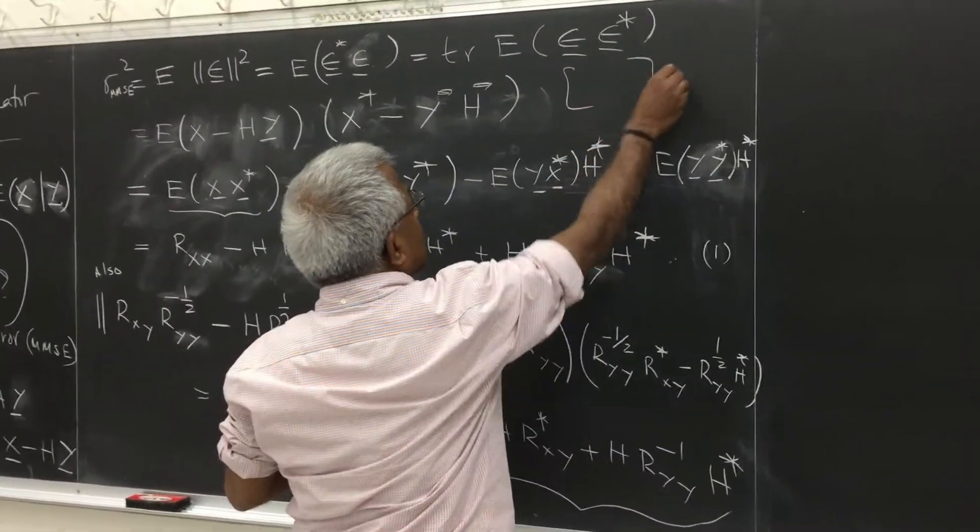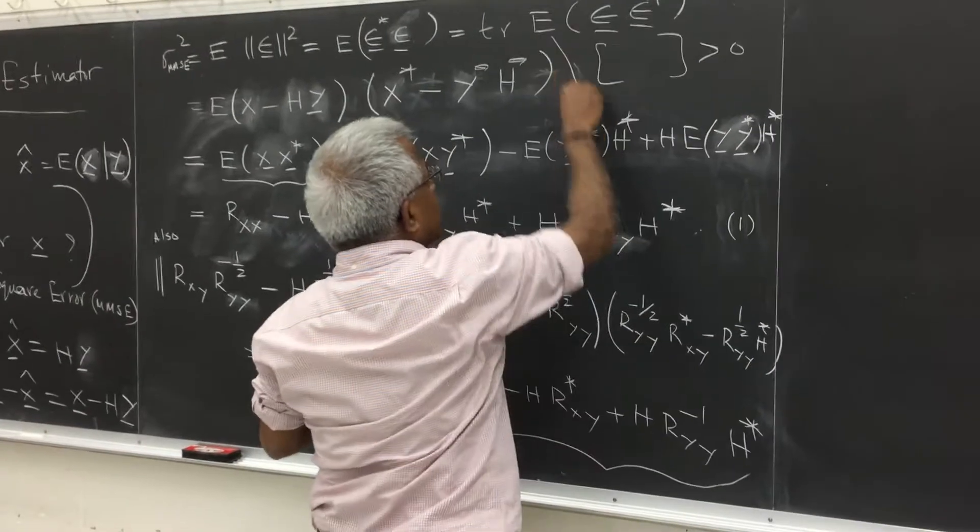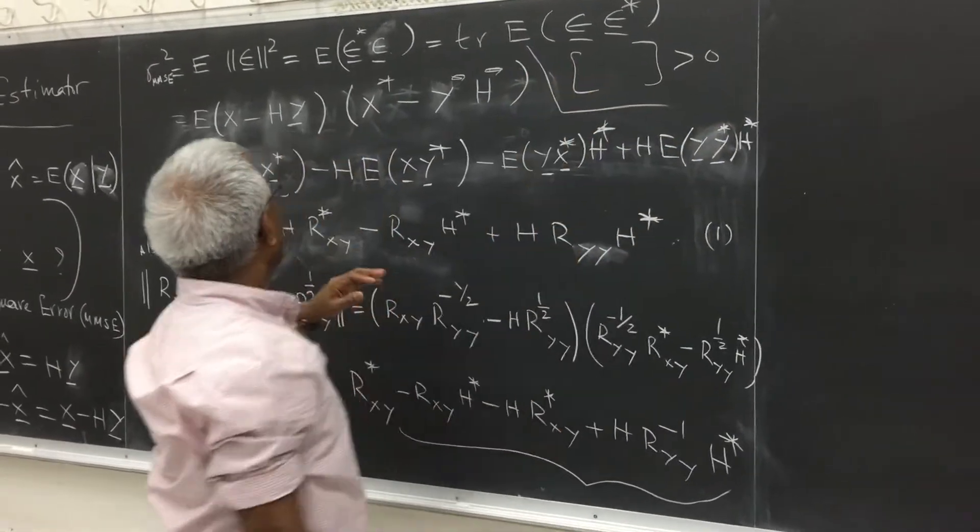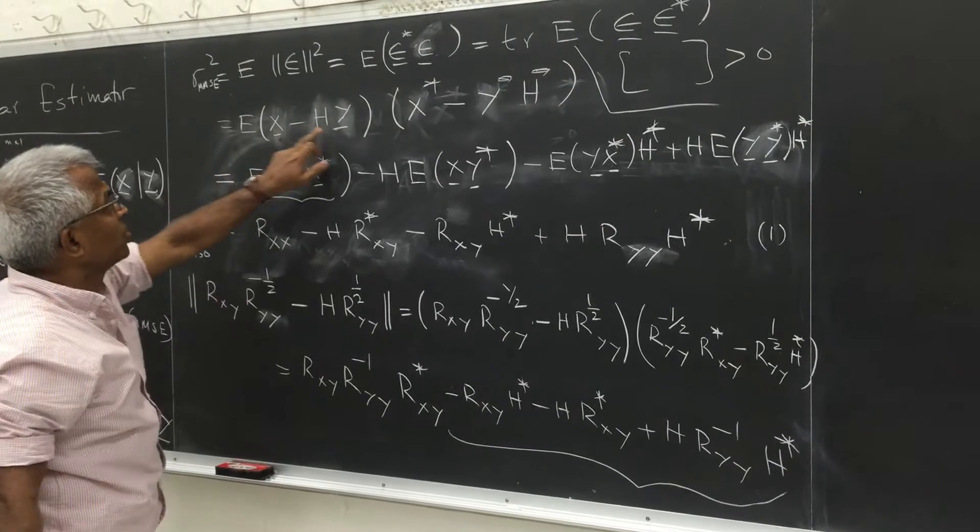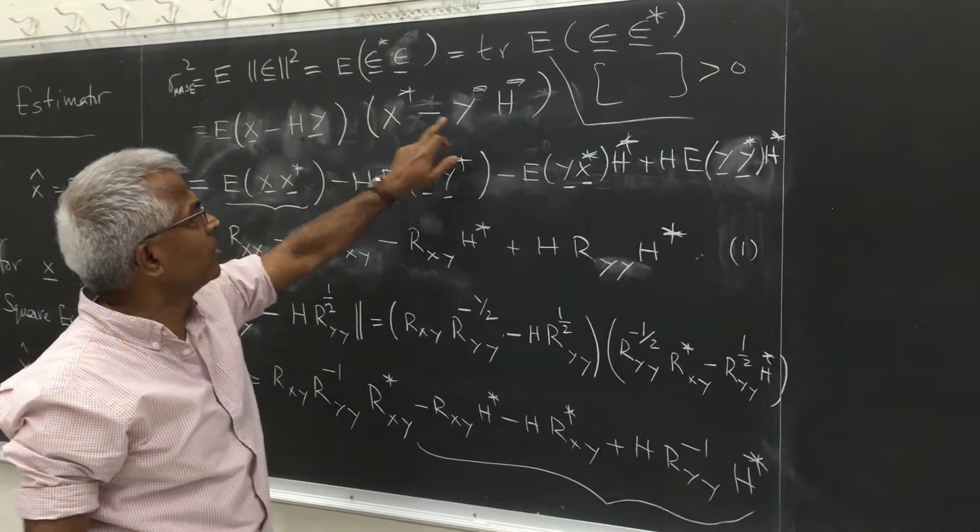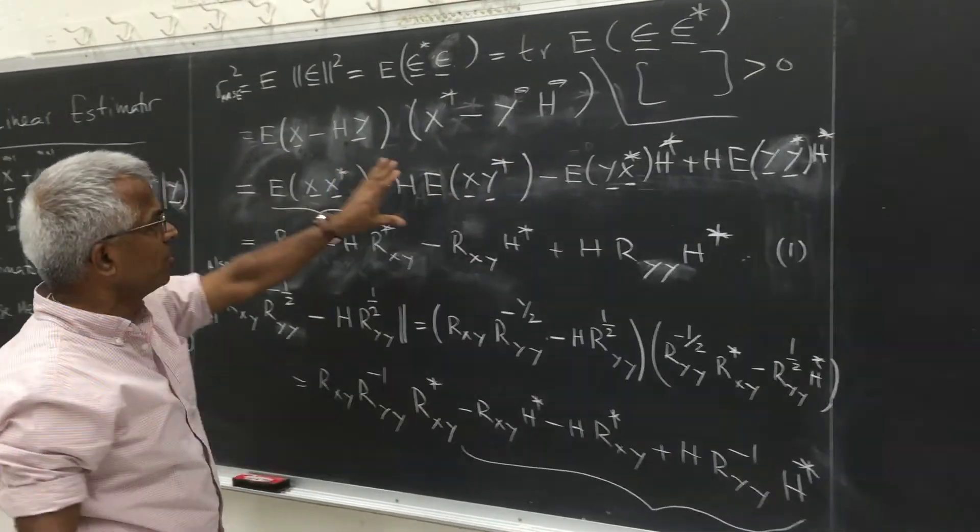This, of course, will be a matrix now. Non-negative, definite. And so we'll substitute for epsilon, which is x minus hy, x star minus y star h star. So there will be four terms.